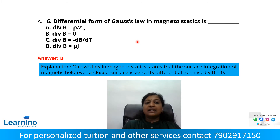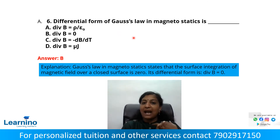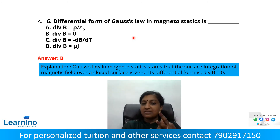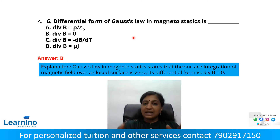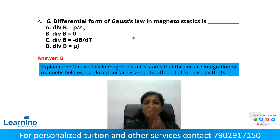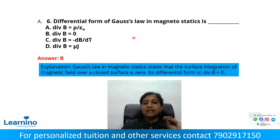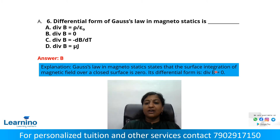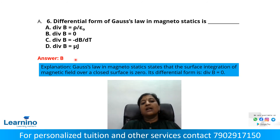Question number 6: Differential form of Gauss's law in magnetostatics. We have four Maxwell's equations covering Faraday's law, Ampere's circuit law, Biot-Savart law, and both magnetic and electric fields in differential and integral forms. The differential form of Gauss's law in magnetostatics is: divergence of B equals zero. This states that the surface integration of the magnetic field over a closed surface is zero.